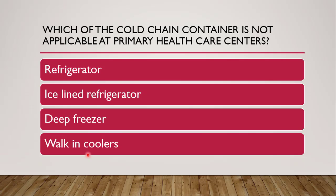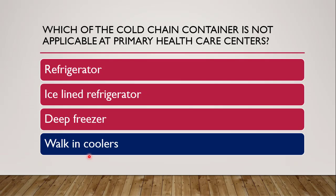Next question: which cold chain container is not applicable at primary health care center? The options are refrigerator, ice-lined refrigerator, deep freezer, or walk-in coolers. The correct answer is again walk-in coolers, because walk-in coolers are applicable to district or state level where the demand is more and it is a big room. Primary health centers don't need that much storage, so refrigerators, ice-lined refrigerators, and deep freezers are applicable there, but walk-in coolers are not required.